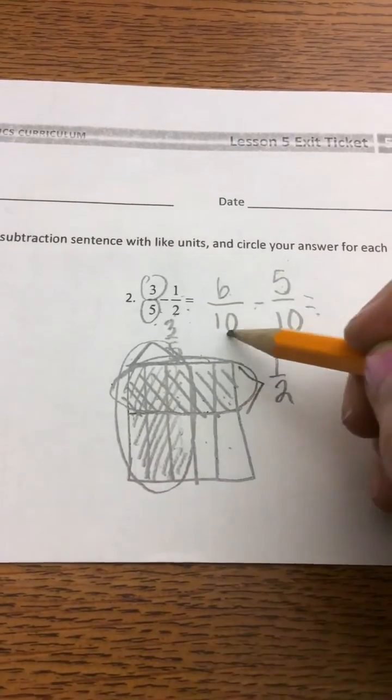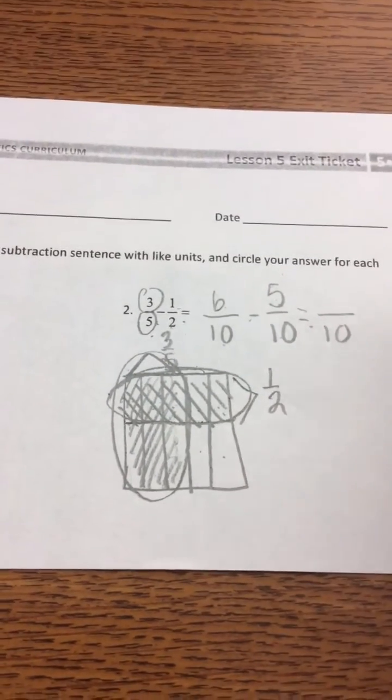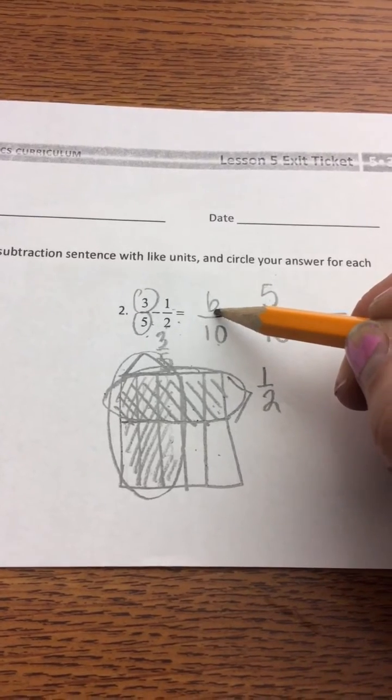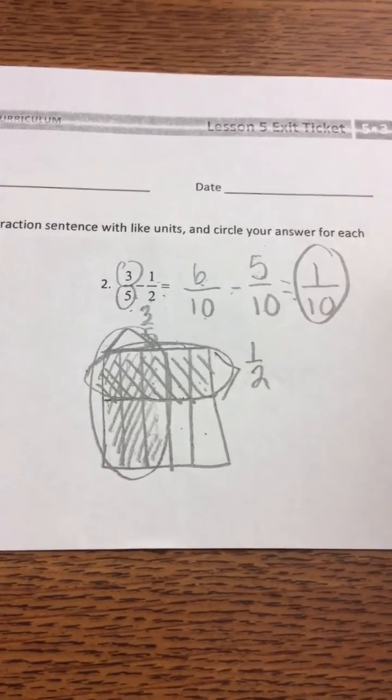Now I can subtract because I have two like units. My denominator never changes in addition or subtraction, so now I can subtract my numerators. 6 minus 5 equals 1. I get an answer of 1/10.